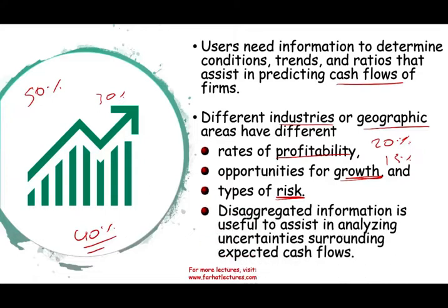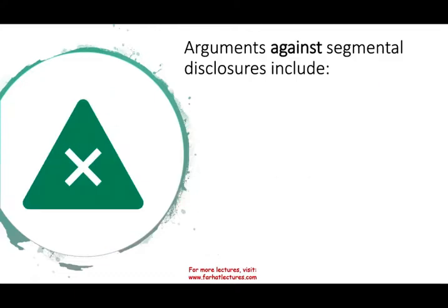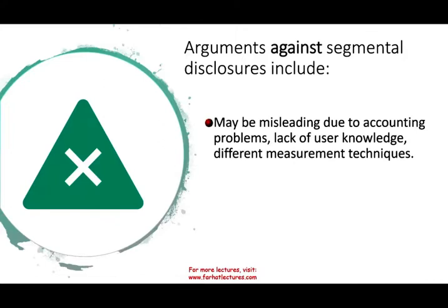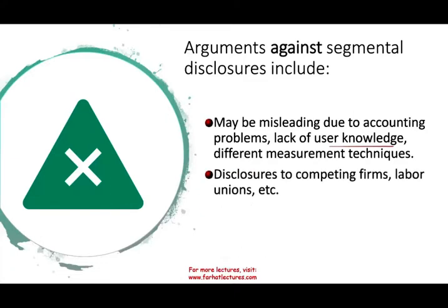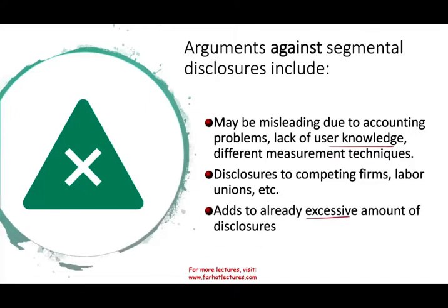Opportunities for growth matter too — if I know you're operating in Africa, there's tremendous growth potential there. And the type of risk is important: if you're operating in the Middle East, there's always a risk of war. If 40% of your revenue comes from that area, there's always that risk. Aggregating information is useful in analyzing uncertainties surrounding expected cash flows. However, there are arguments against segmental reporting: it could be misleading because we might use different accounting standards, users may not understand the technique, and disclosure might give information to competitors or labor unions.